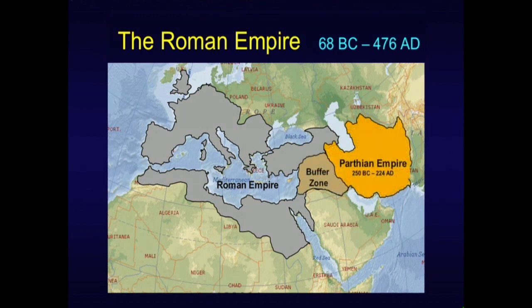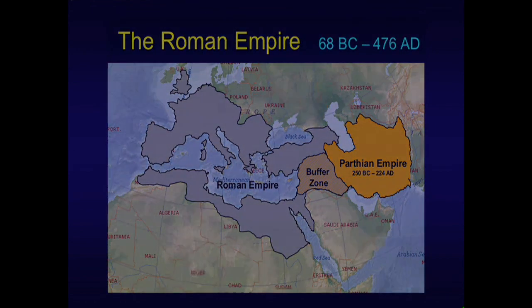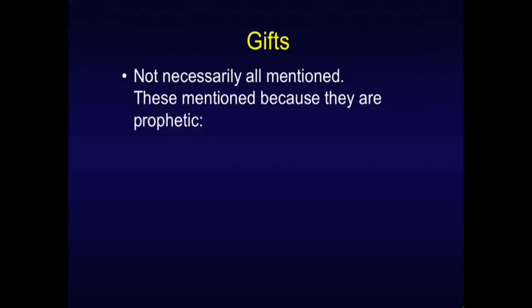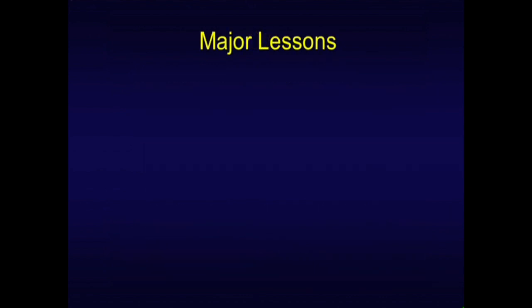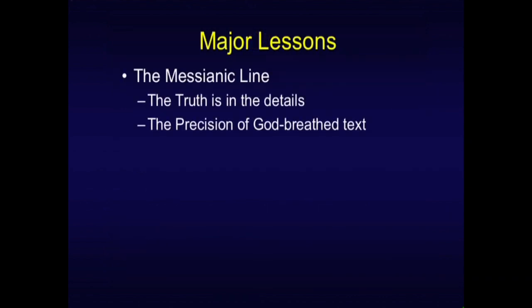Last time we talked about the Roman Empire, and also pointed out that the Parthian Empire was a rival during the period we're discussing — a couple of centuries both before and after Christ. That buffer zone explains why Herod was so upset with the magi showing up. The three gifts — gold, frankincense, and myrrh — are prophetic of Jesus being prophet, priest, and king. The major lesson was the Messianic line, that truth is in the details, the precision of the God-breathed text, including the numerics.